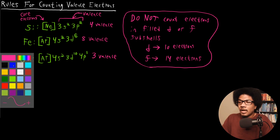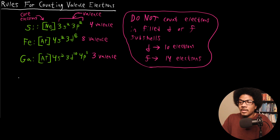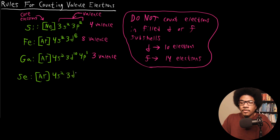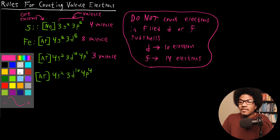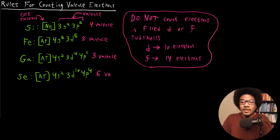Let's do another example — selenium. Selenium has a configuration of argon, 4s2, 3d10, 4p4. Again, we don't count these 10 D electrons. We only count the four in the 4p and the two in the 4s, giving us six valence electrons for selenium.